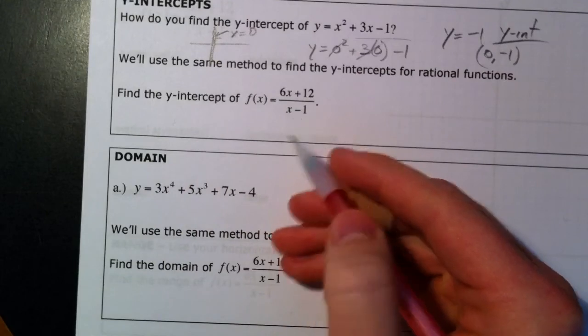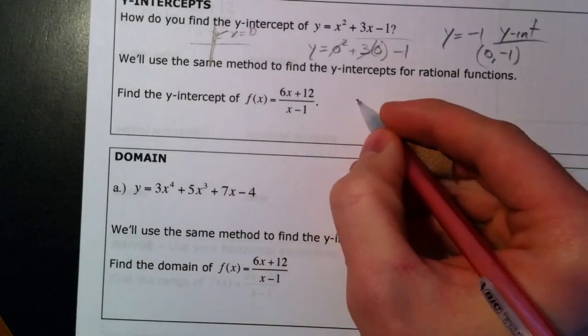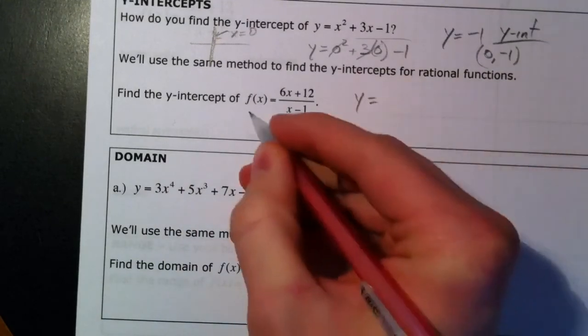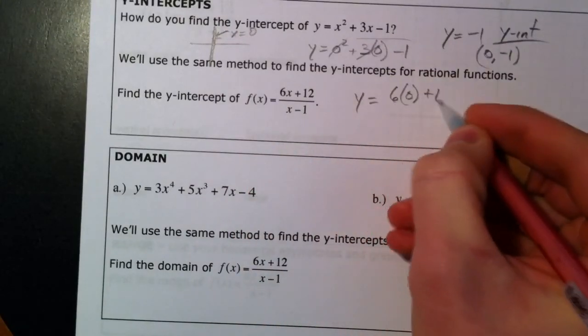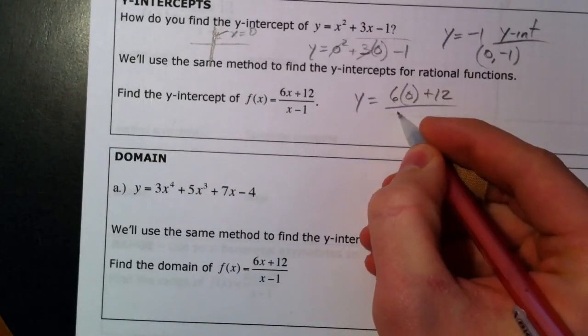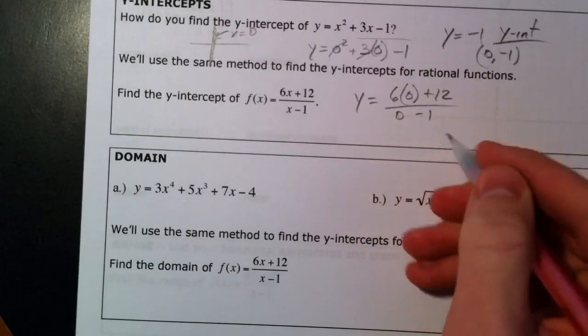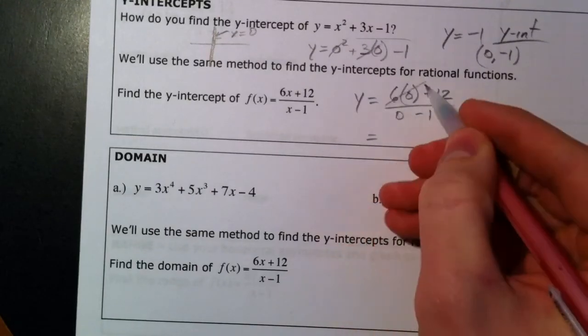Find the y-intercept of this one. Do the exact same thing. I'm just going to put a y instead of the f of x. 6 times 0 plus 12 over 0 minus 1. And so this cancels out. You're left with just 12 on top. 0 minus 1 is a negative 1.